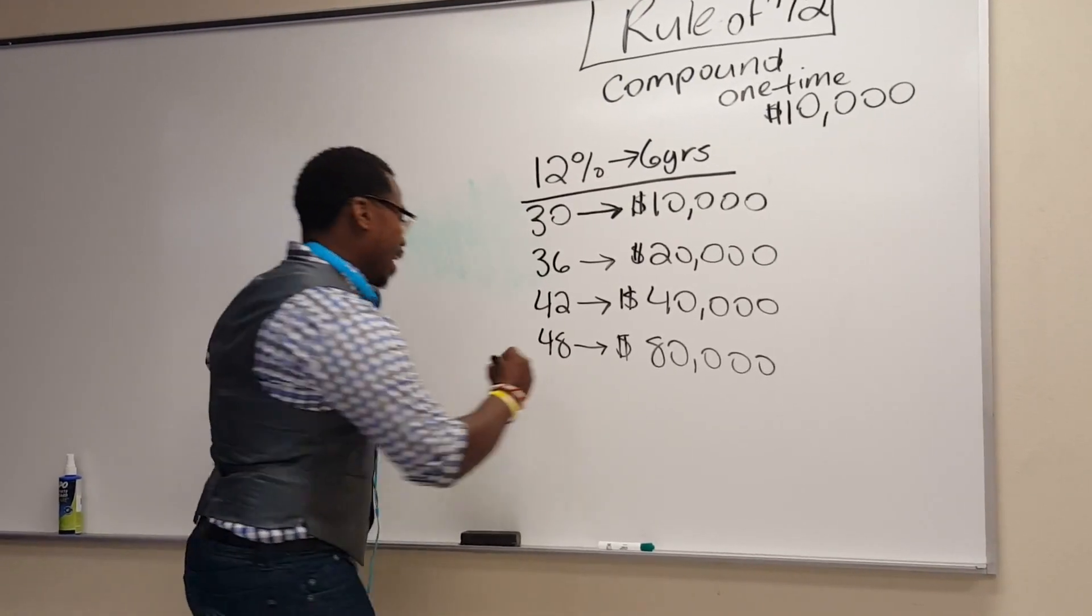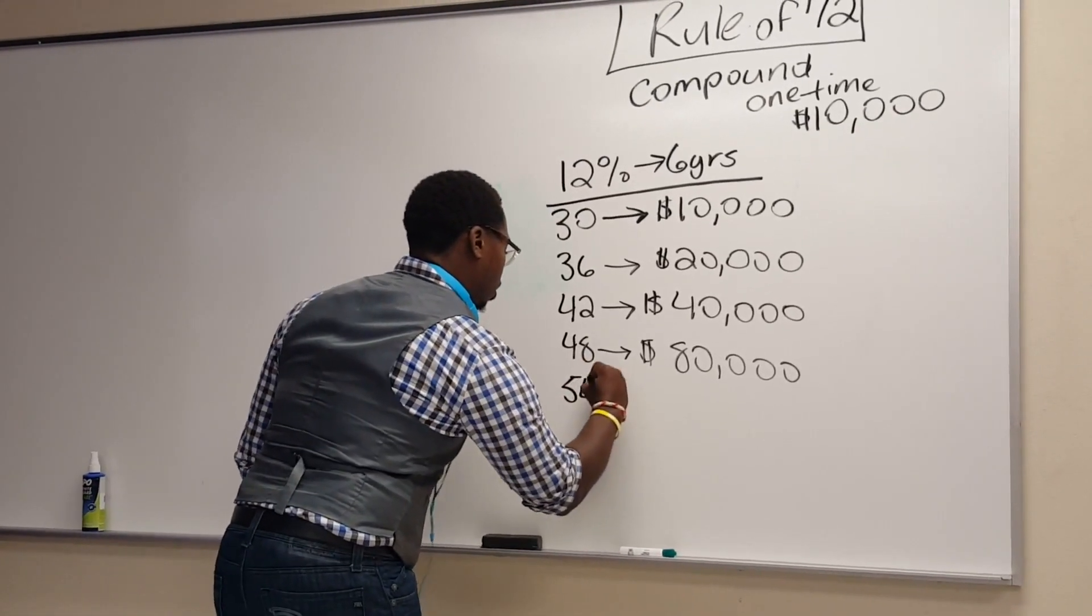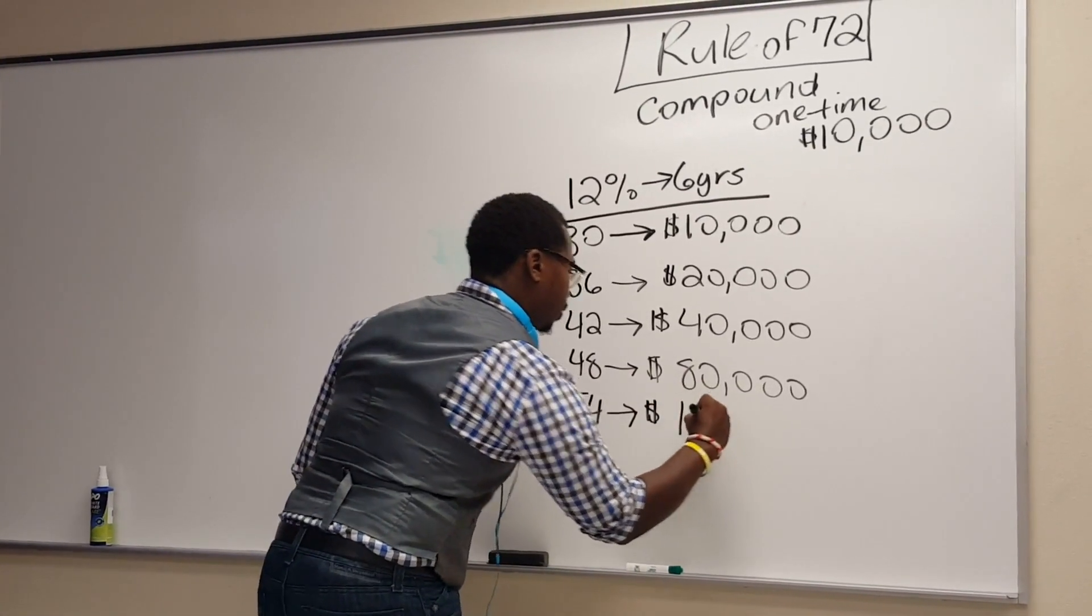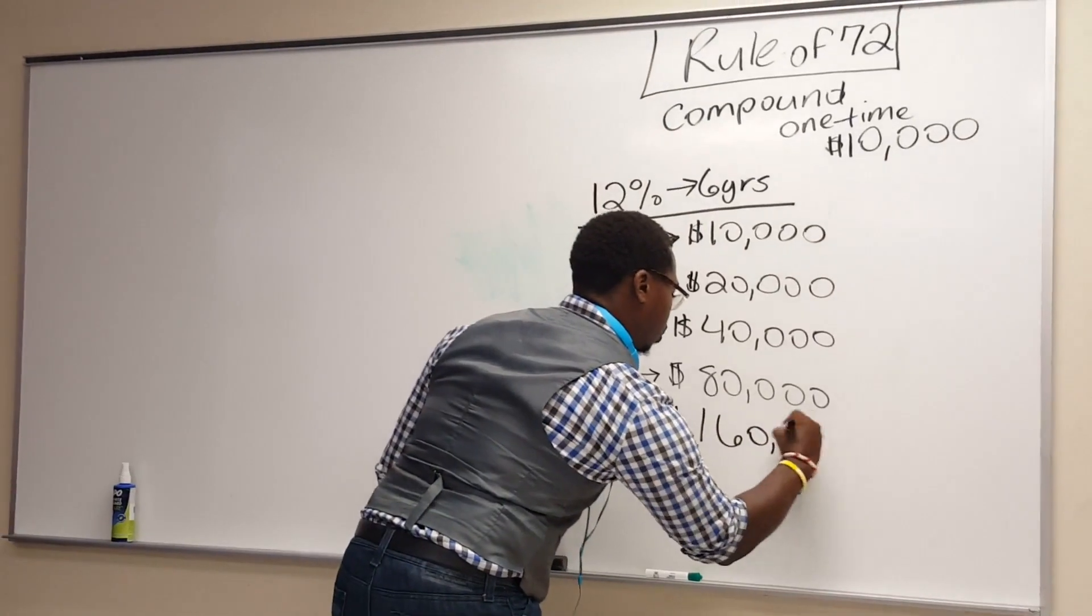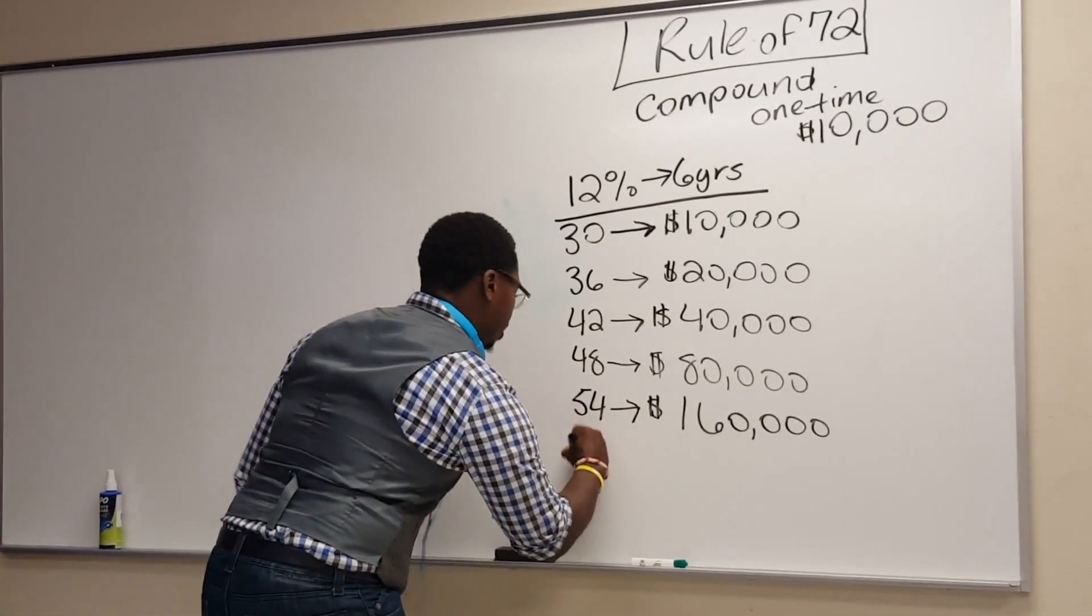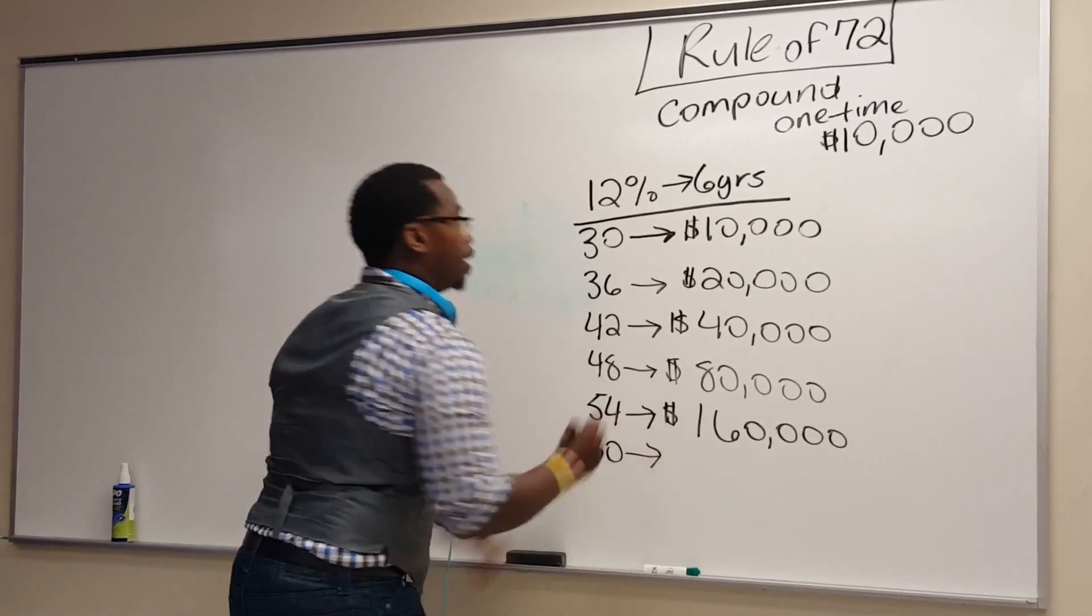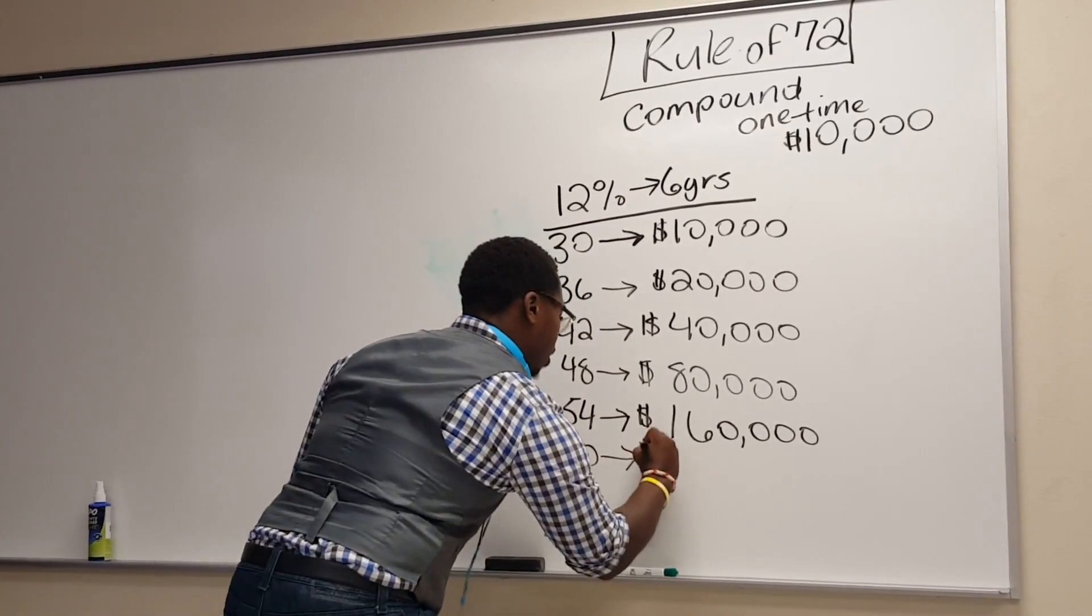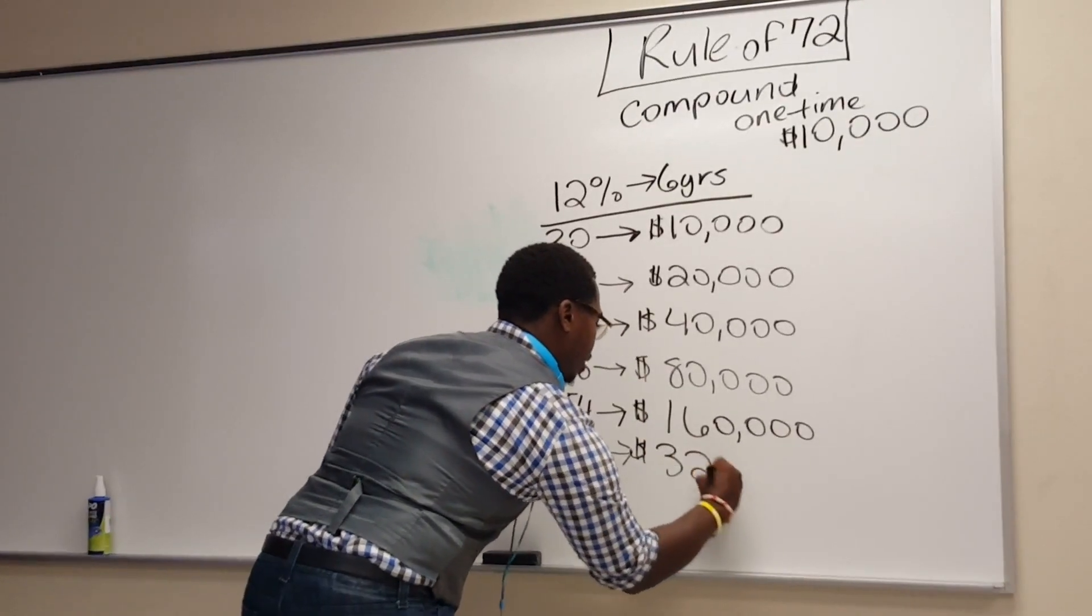So let's keep going. At age 54, the bank is now made $160,000. At age 60, because the money is doubling every 6 years, the bank made $320,000.